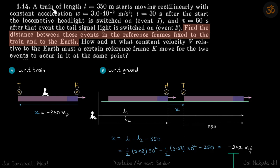We are given a train of length L moving rectilinearly with a constant acceleration W. At a time t, its headlight is turned on, and after a further time period of tau, the tail light is turned on. We need to find the distance between these events in the reference frames fixed to the train and to the earth.